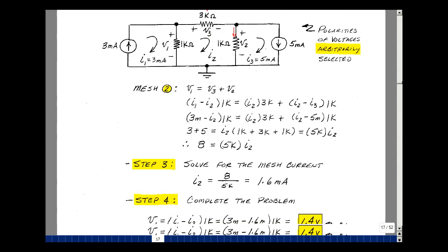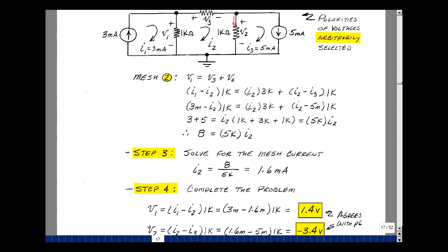One equation, one unknown. Step 3 is to solve for the mesh currents. We have only one here, and it's just going to be equal to 8 volts divided by 5k, and that's 1.6 milliamps.